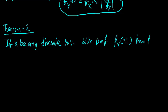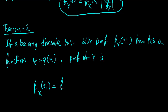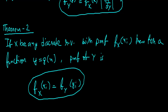Then for a function y equals G of x, its PMF will be: PMF of Y equals f of x at x_i equals f of y. This right here is the main formula for the discrete case.